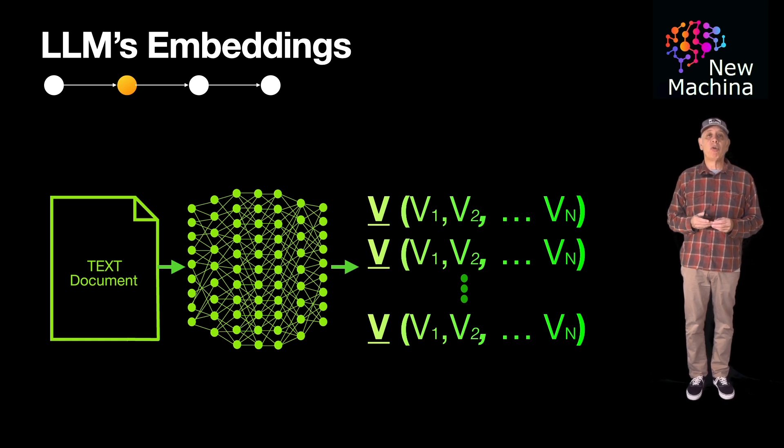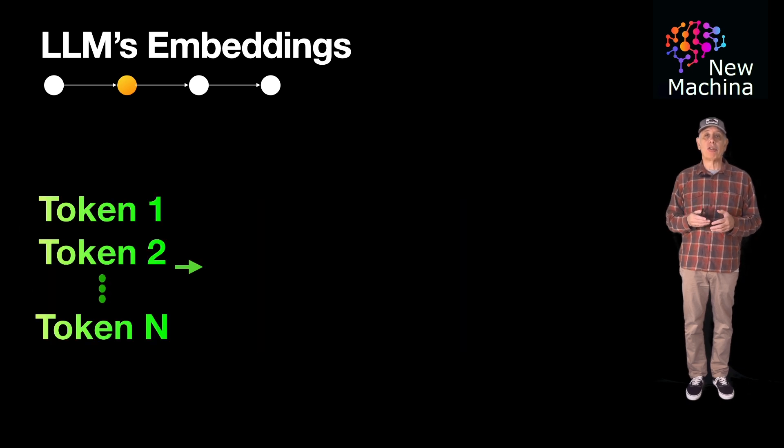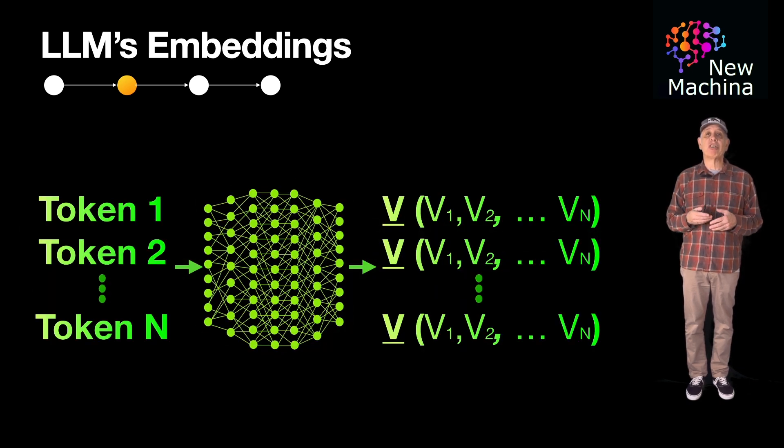The result of step two is a generation of an embedding, which in this example of a text document, is a sequence of vectors. Each vector corresponds to a token and captures its meaning in n-dimensional space. These vectors enable the model to perform mathematical operations and understand relationships between tokens. I plan to go into more detail on LLM embeddings in an upcoming video, but this should give you a quick high-level conceptual overview of how this works.